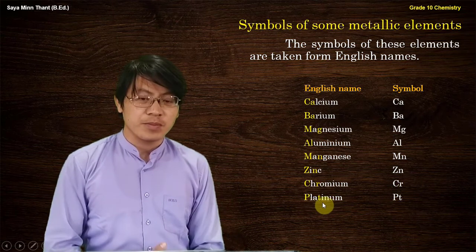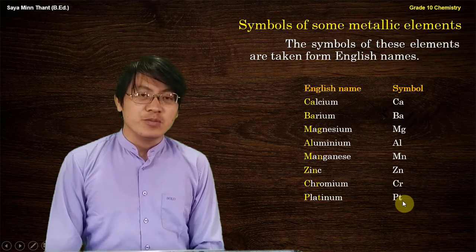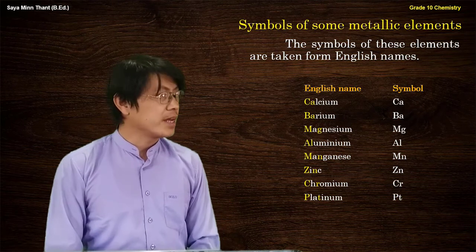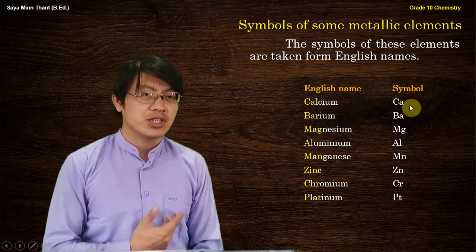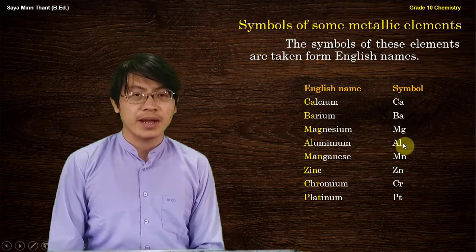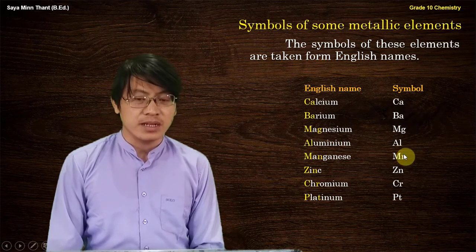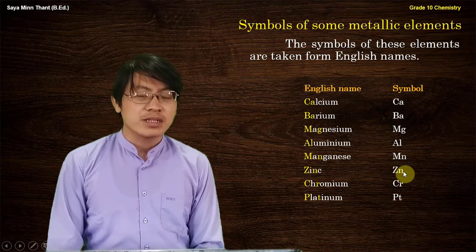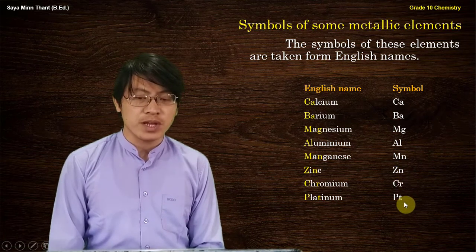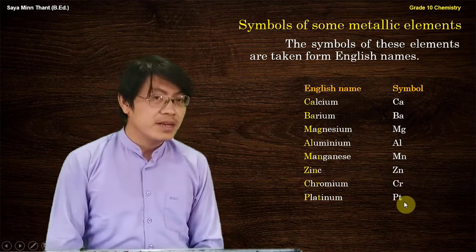There are: Calcium (Ca), Barium (Ba), Magnesium, Aluminium (Al), Manganese, Zinc (Zn), Chromium (Cr), Platinum (Pt).